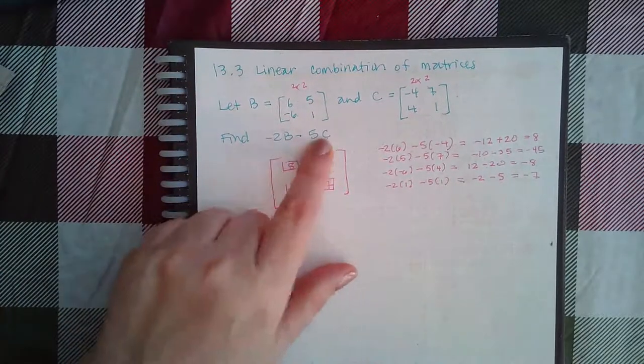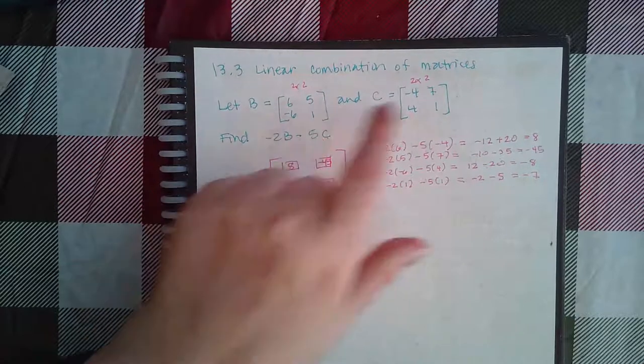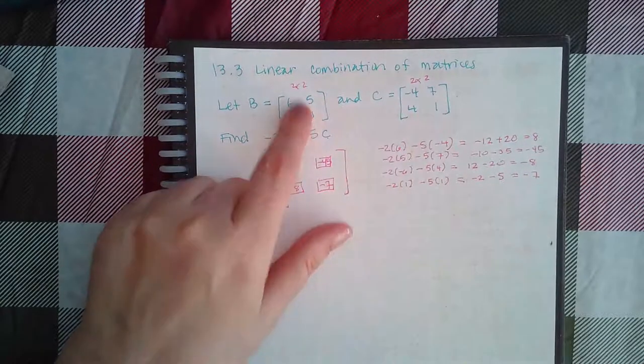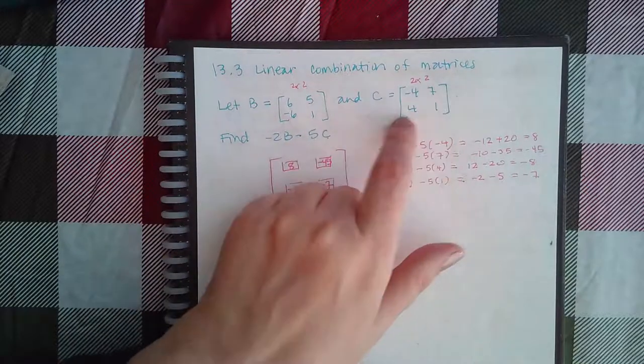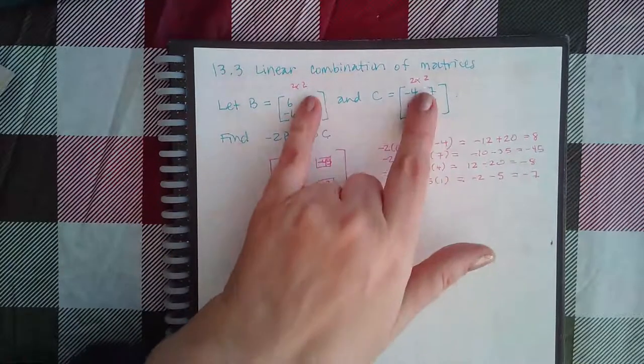However, in order to do addition or subtraction, they do have to have the same dimension. And these are two rows by two columns. C is also two rows by two columns. So they do have the same dimensions.